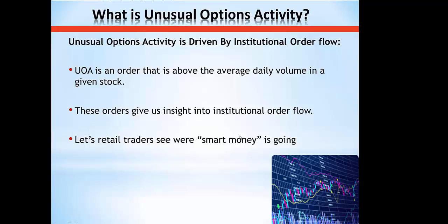Unusual option activity is an order above the average volume. Every single stock has average option volume for a day. Let's say XYZ trades 1,000 options in a day — if it instead trades 5,000 options that day, that's 5.0 times usual volume, which is unusual option activity. I'm sure many of you have seen Pete and John Najarian on CNBC talking about institutions coming into the market and buying calls that go from 10 cents to a dollar within minutes. These orders give us insight into institutional order flow — they show us where the smart money is going.